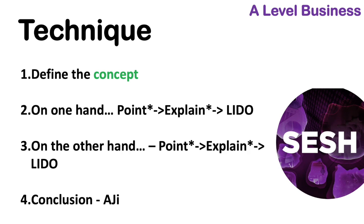Now in terms of technique, here is a suggested structure. Define the concept and then go to on one hand. On one hand, take your initial point and explain it in context, and then you might want to hook back with a limitation of that or it depends on point. Thirdly, on the other hand, take the other side of the argument and then explain a point. Explain it in context and then try and hook back with a limitation to that or it depends on point.